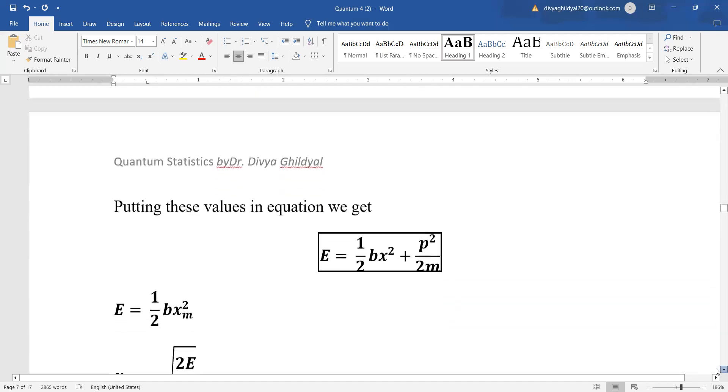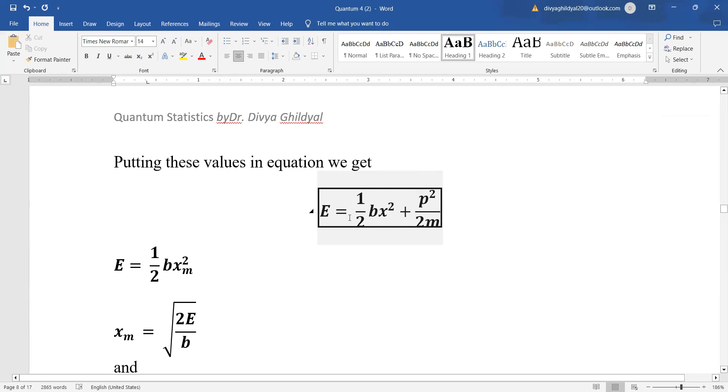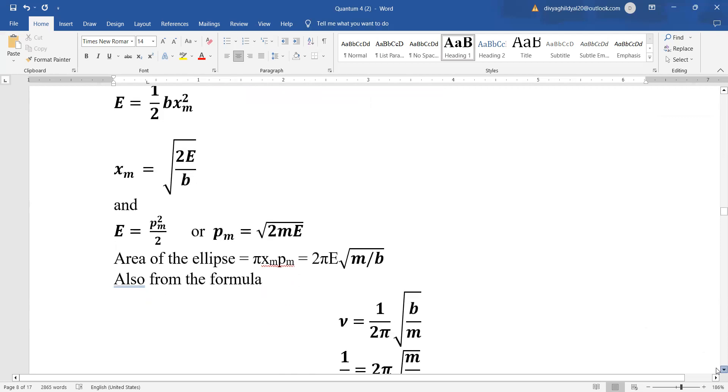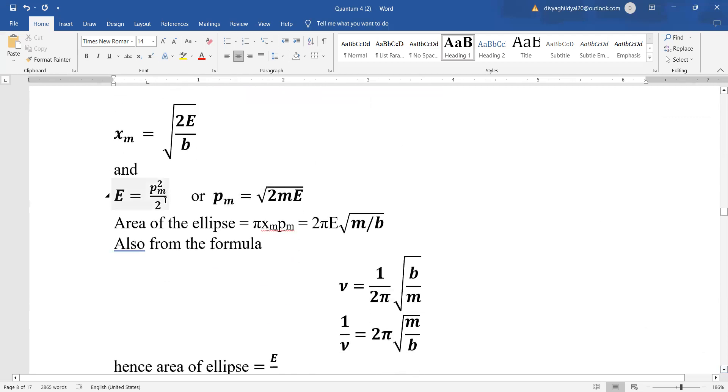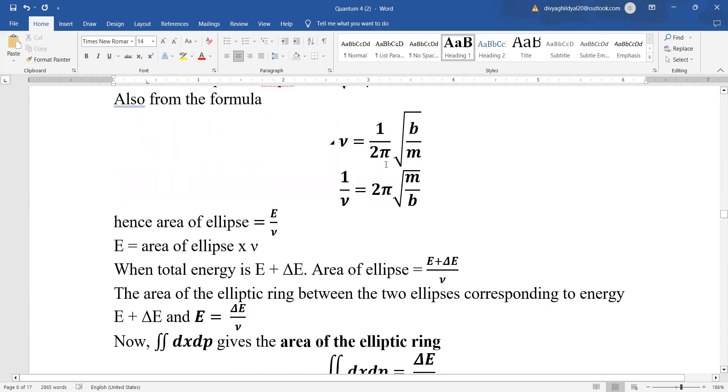Now, putting these values in the energy where we said that total energy is equal to kinetic energy plus potential energy. Now, xm is equal to under root 2e upon b where b is a constant. We will put this value and momentum e is equal to p square upon 2m. So, pm is equal to under root 2me. Area of ellipse π xm pm is equal to 2π e under root m upon b. We put these values and we use the formula for frequency 1 upon 2π under root b by m and 1 upon μ equal to 2π under root m by b. Area of ellipse is equal to total energy divided by frequency.